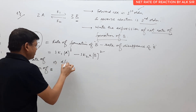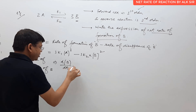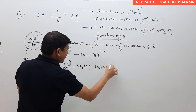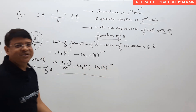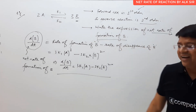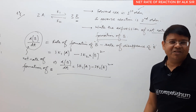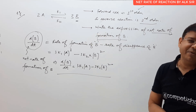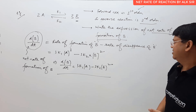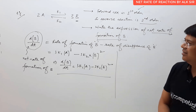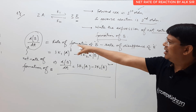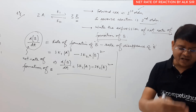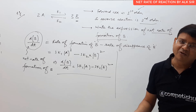So the net rate of formation of B is: dB/dt = 3K1[A] − 3K2[B]². This is how you are supposed to write it. I taught you this because many students face difficulty writing the net rate of disappearance or appearance of a substance involved in a chemical reaction — especially in reversible reactions or mechanisms where multiple steps are involved.